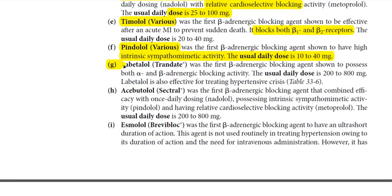Labetalol was the first beta blocker to possess both alpha and beta adrenergic blocking activity. It blocks alpha-1 and alpha-2 receptors as well as beta-1 and beta-2 receptors. Alpha-1 blockade causes vasodilation; alpha-2 blockade causes vasoconstriction — together these effects are balanced. The usual daily dose is 200 to 800 mg, and labetalol is effective for treating hypertension.